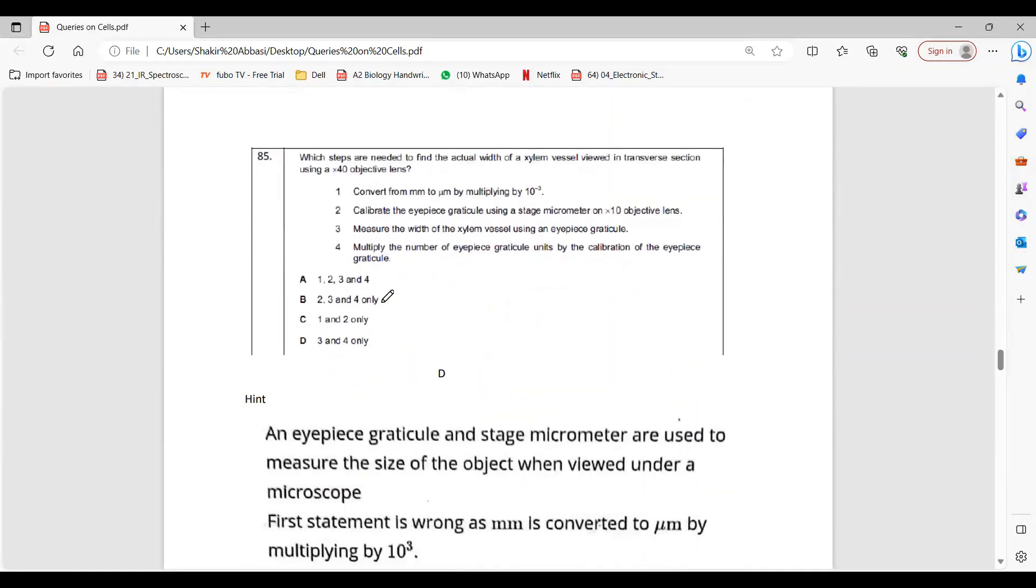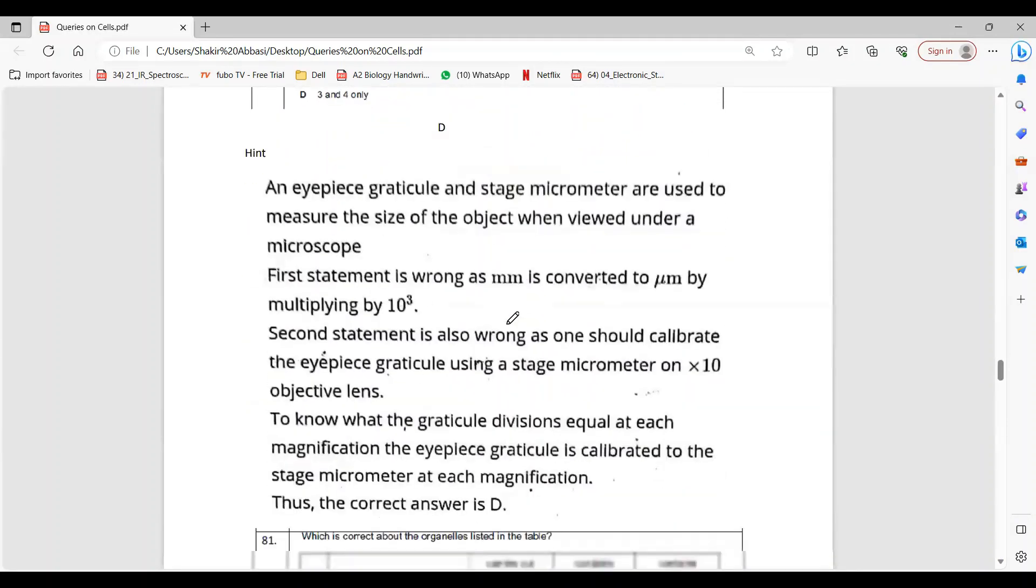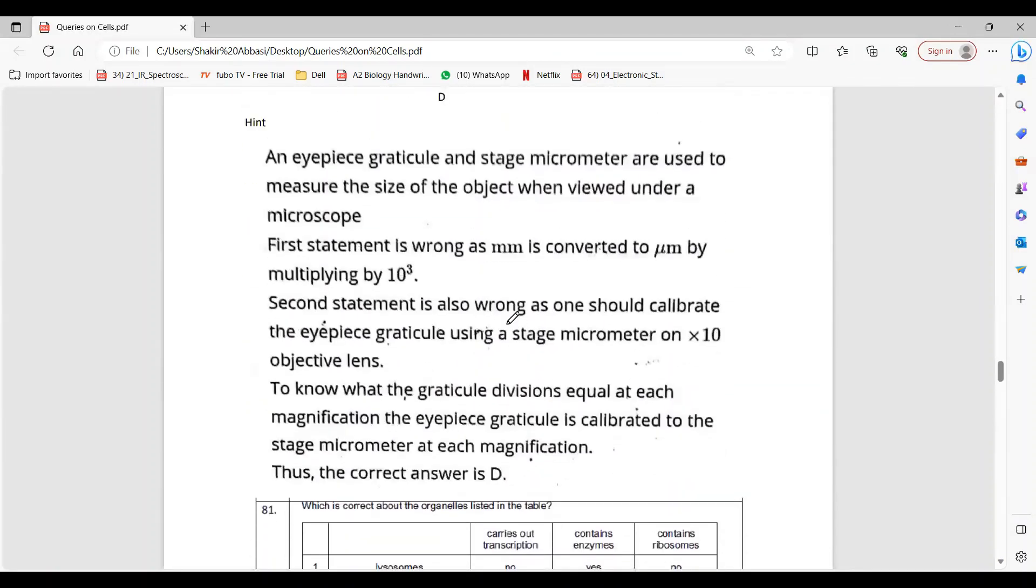Question 85 says D is the answer. Three and four. One is wrong because this should be multiplied with 10 to the power 3, but this is minus 3. And secondly, when you calibrate it's not only with 10 objective lens. So three and four are right, you can read this hint about this. This is an internet comment.